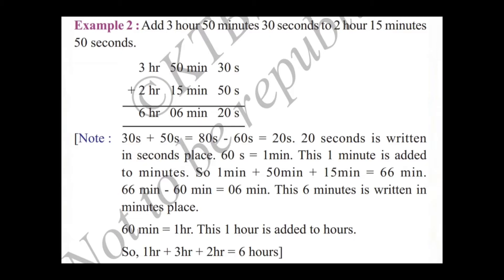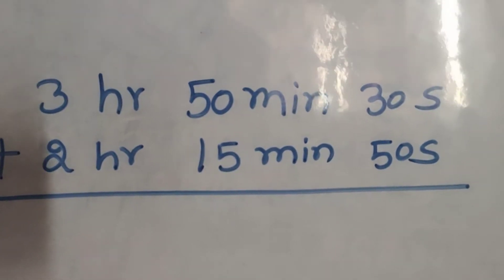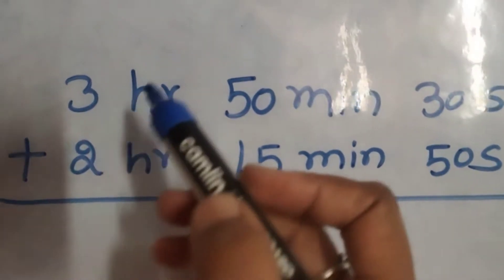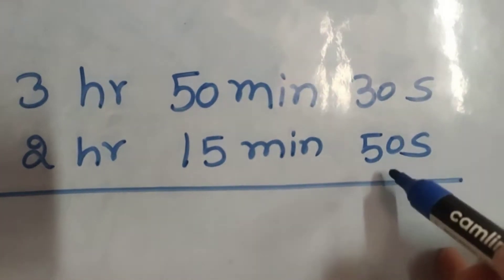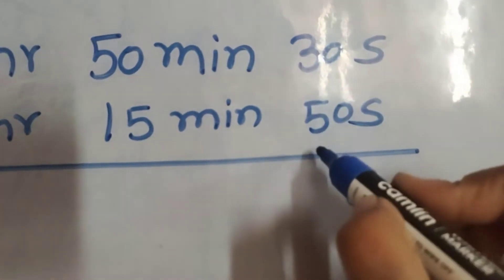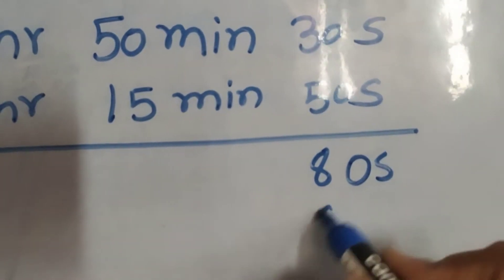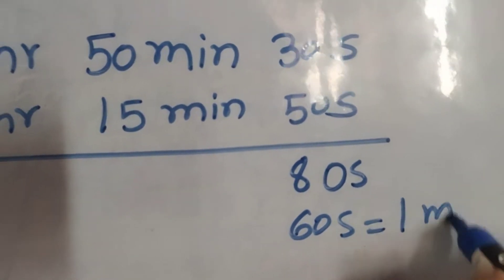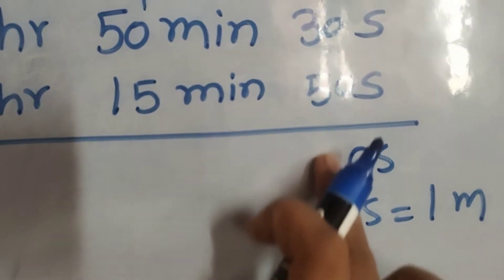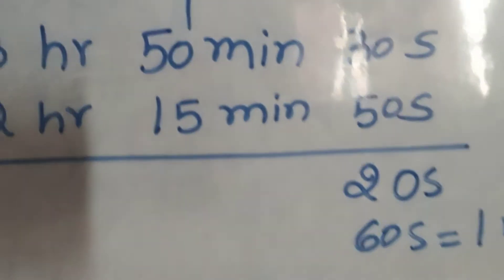Example 2: Add 3 hours 50 minutes 30 seconds to 2 hours 15 minutes 50 seconds. We add hours with hours, minutes with minutes, and seconds with seconds. 0 plus 0 is 0, 3 plus 5 is 8. As we know, 60 seconds is equal to 1 minute, so we carry 1 and 20 seconds remain.